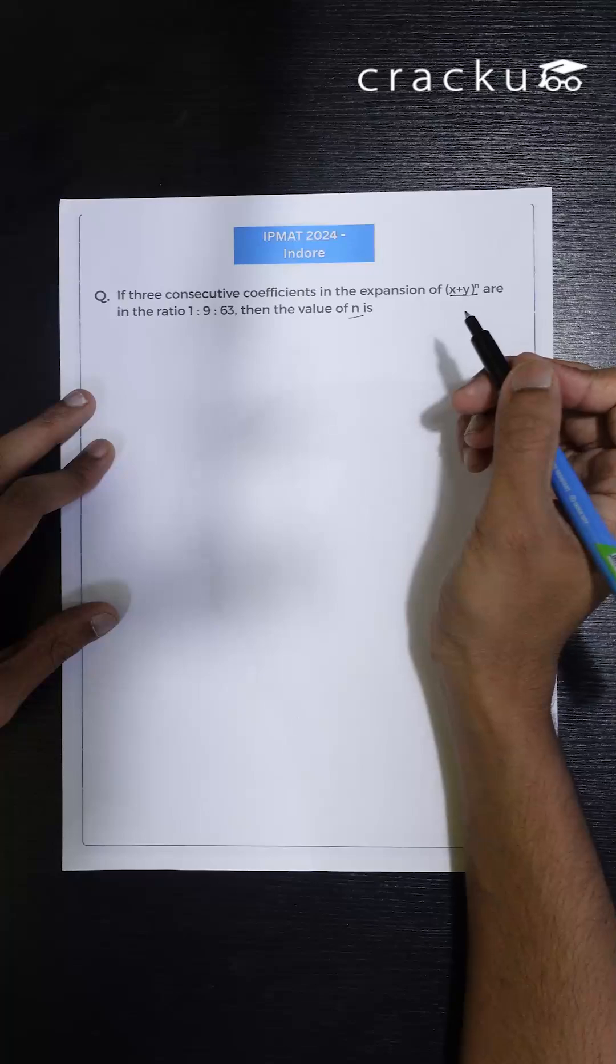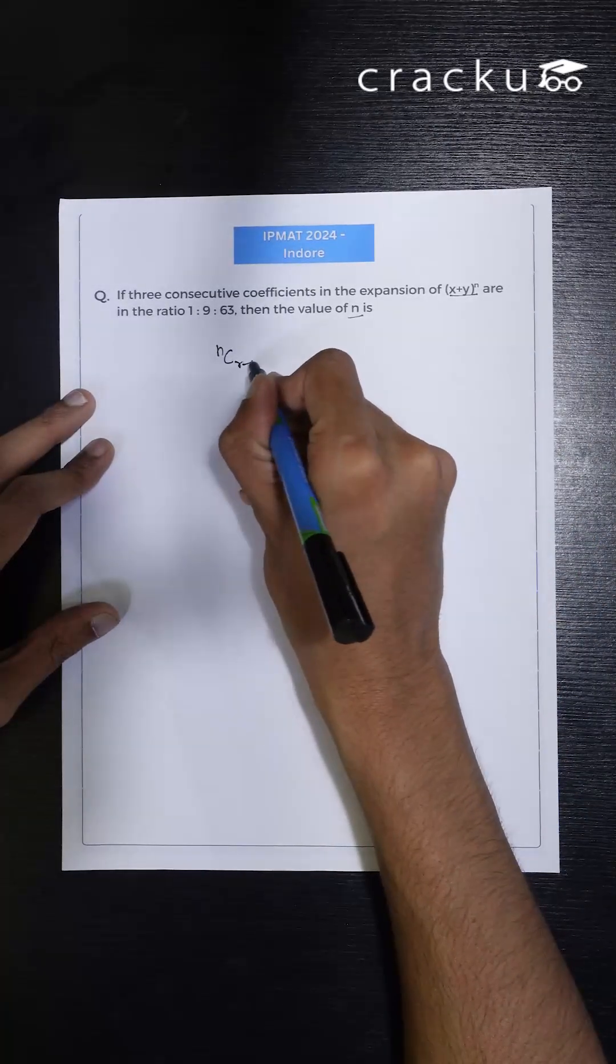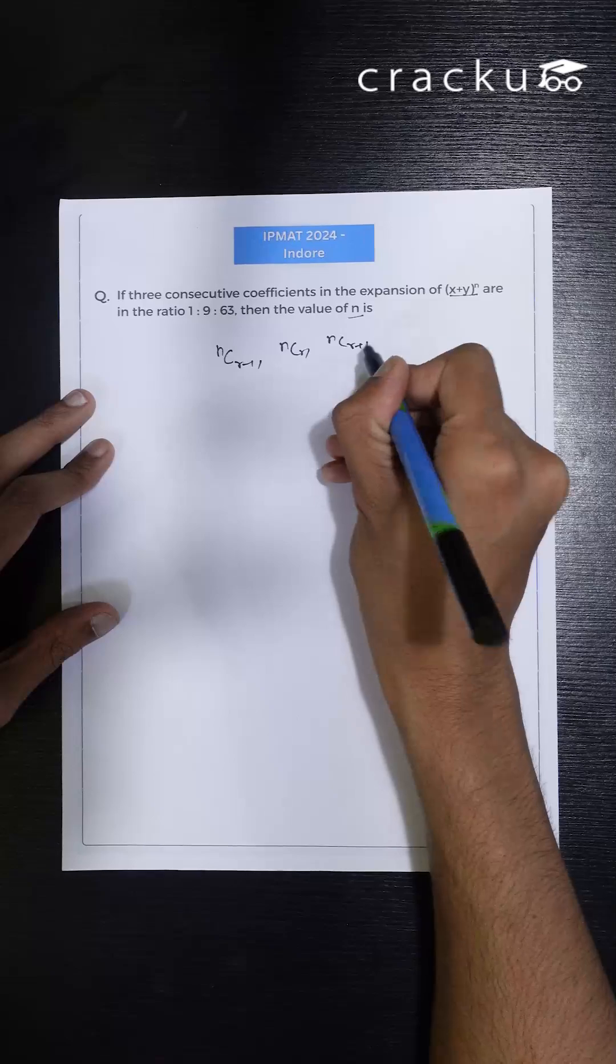Now three consecutive coefficients of binomial expansion I can take as nC(r-1), nCr, and nC(r+1).